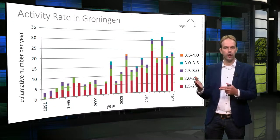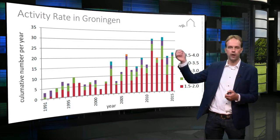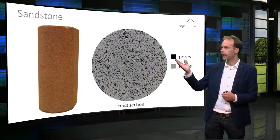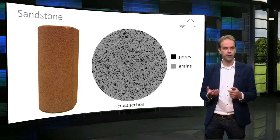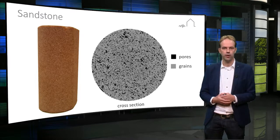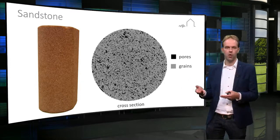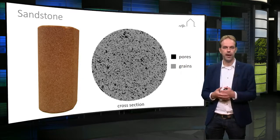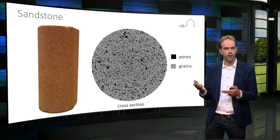Because of the continuous increase in compaction within the Groninger gas fields, more and more seismic events have been recorded over time. But what actually is compaction? The Groninger gas reservoir lies within a sandstone rock about 3 km below ground level. The sandstone has a porosity of about 20%, which means that in between the sand grains, around 20% of the volume is empty space. These empty spaces are called pores, and they are filled with gas.